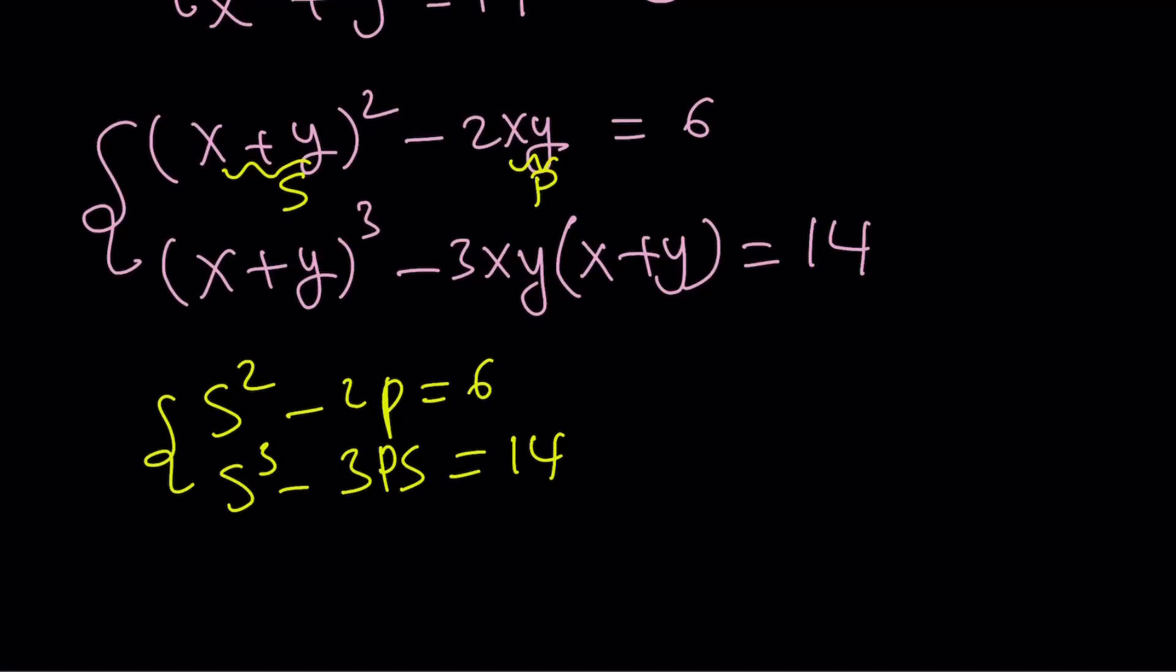Now, this is a really easy system to solve. You can do quite a few different things. Like you can isolate p from the first equation and plug it into the second one. You're going to get a cubic. But I'm going to do the following, multiply both sides by s.